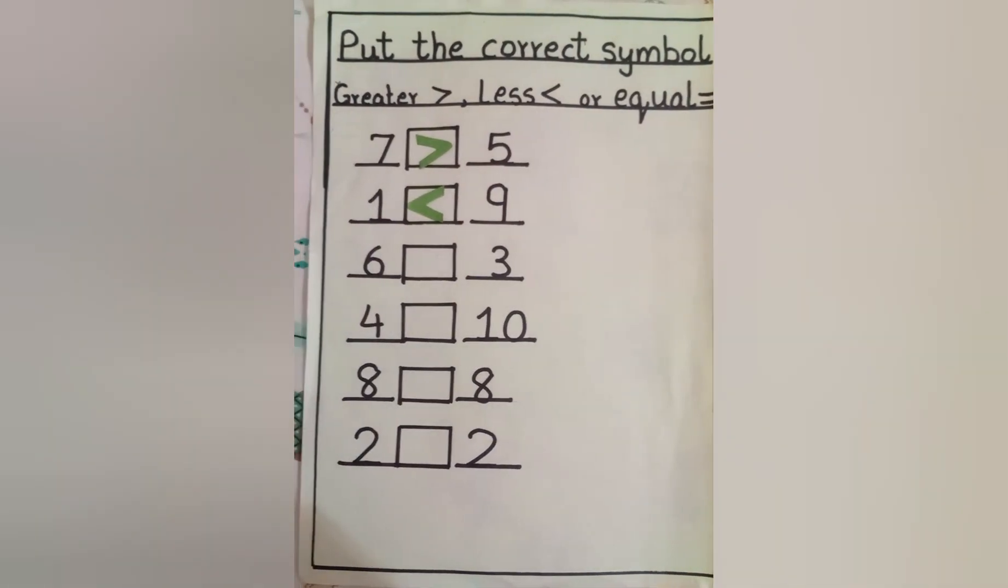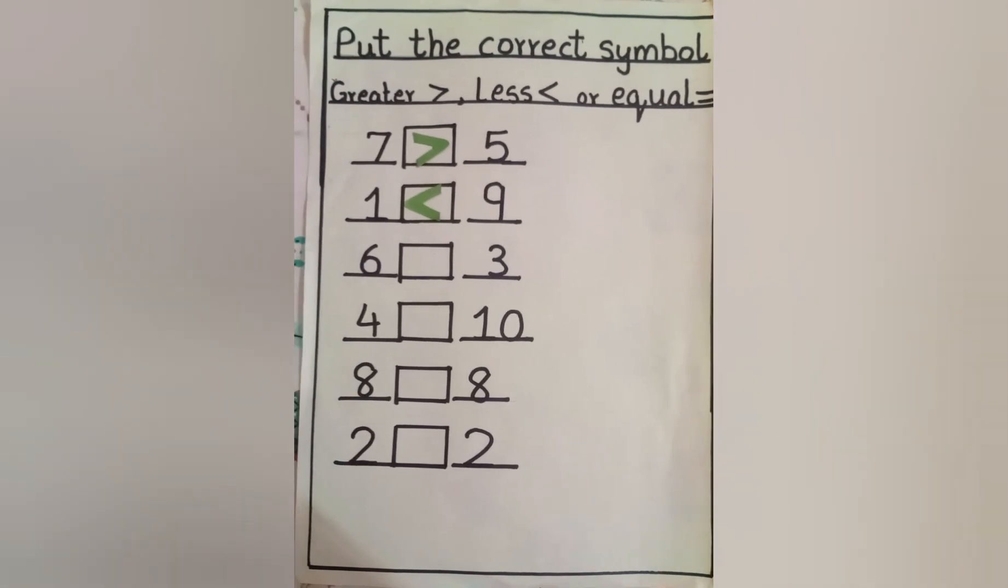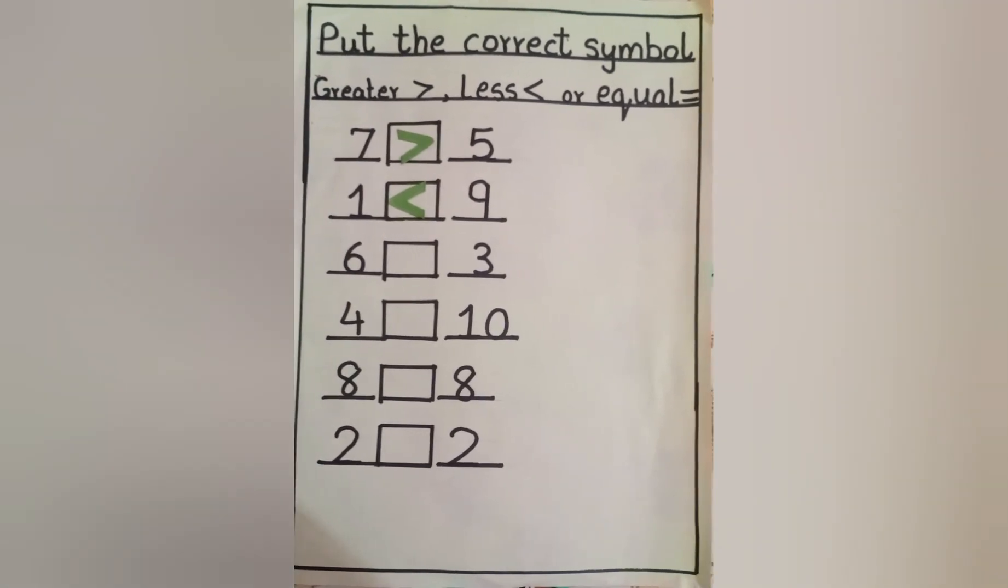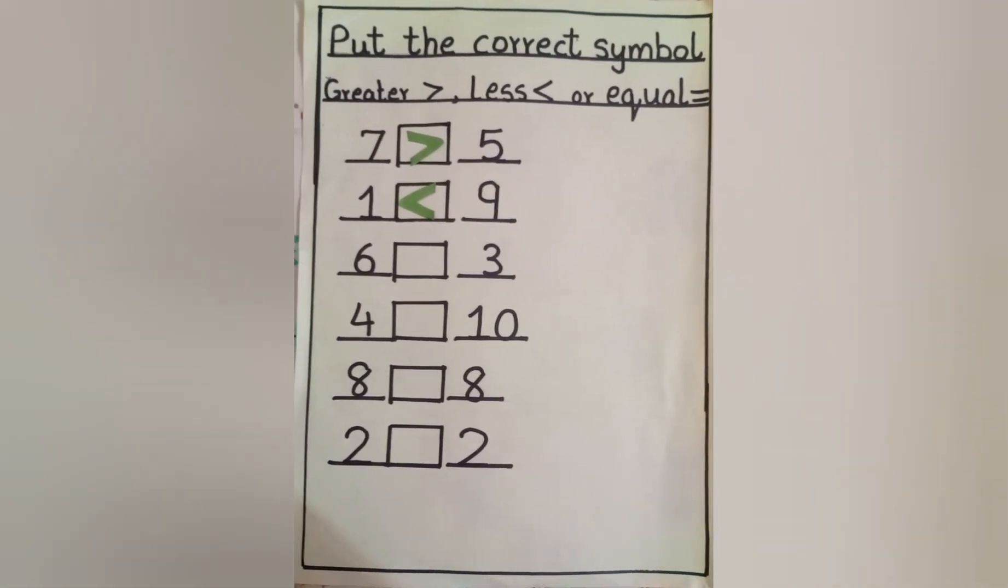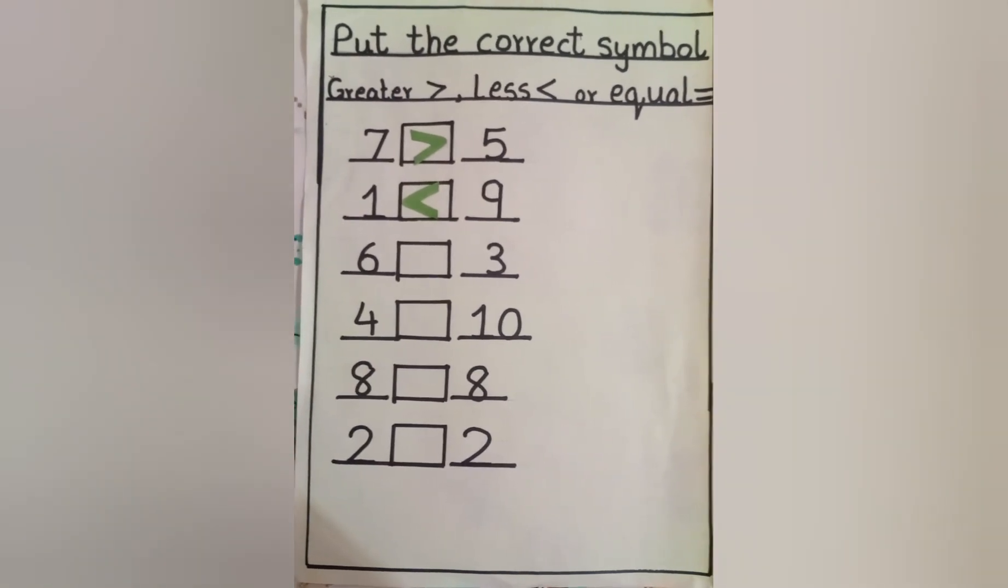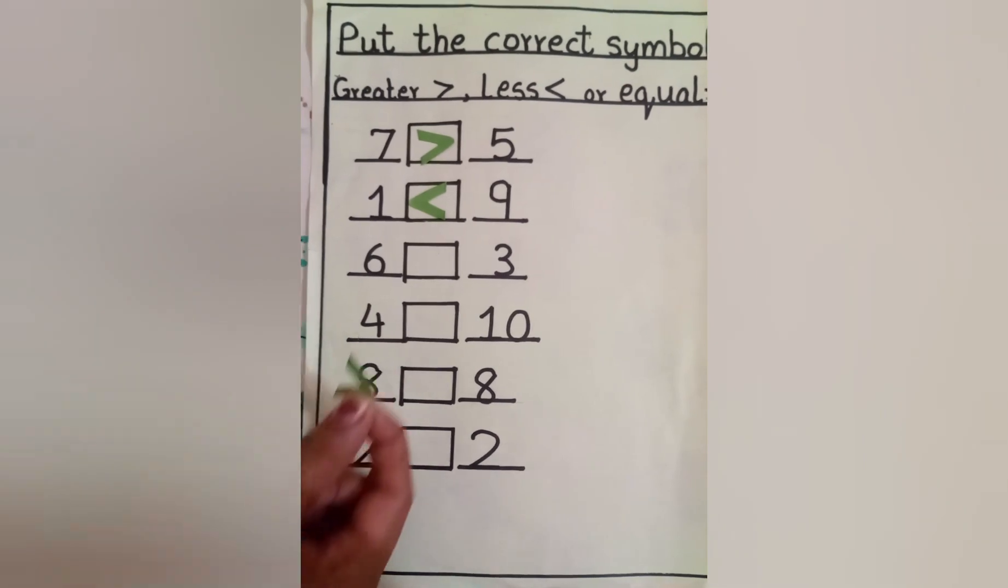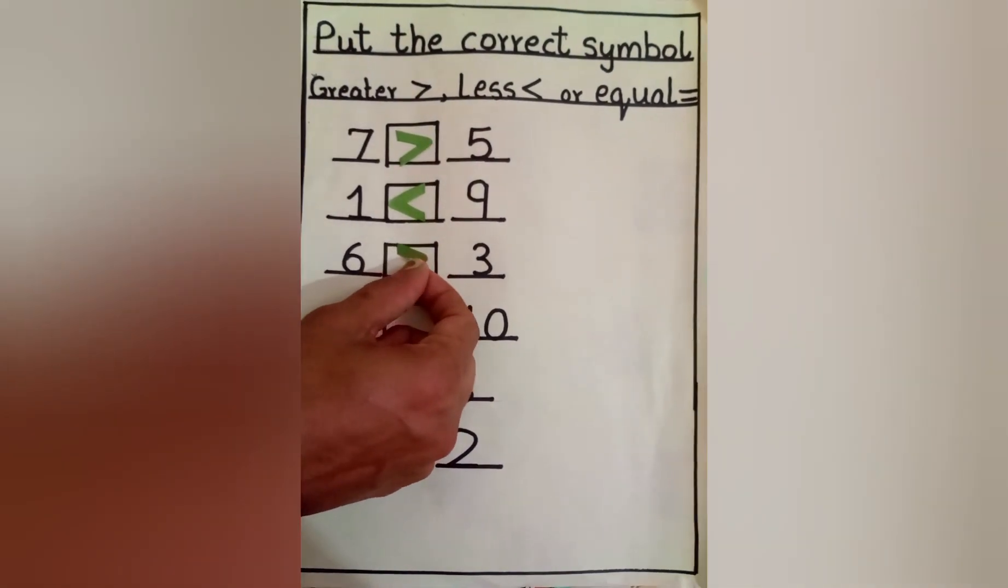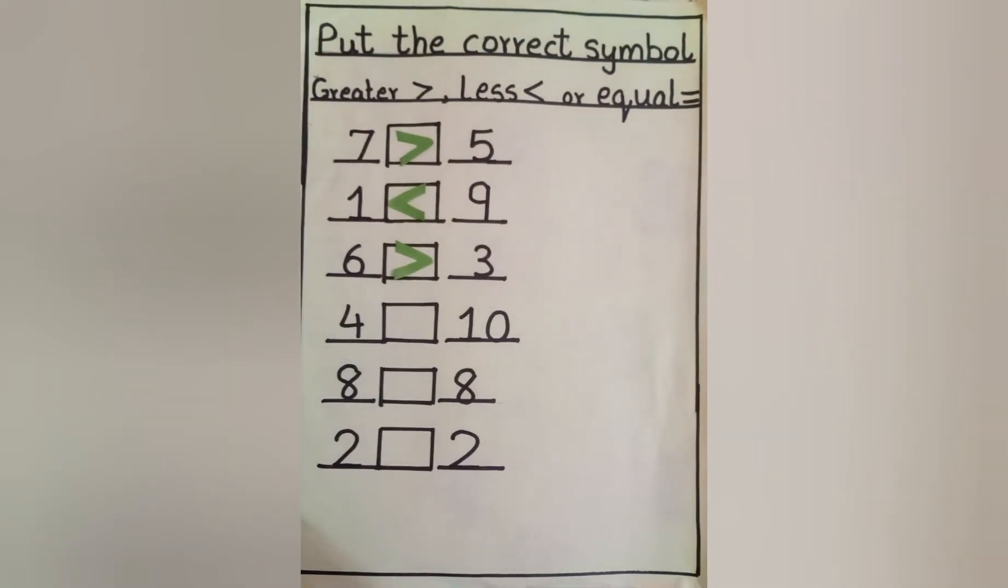Come to the next number. Which number is greater number? Six or three? Very good. Number six is greater number. Now crocodile will eat number six. Yum yum yum.